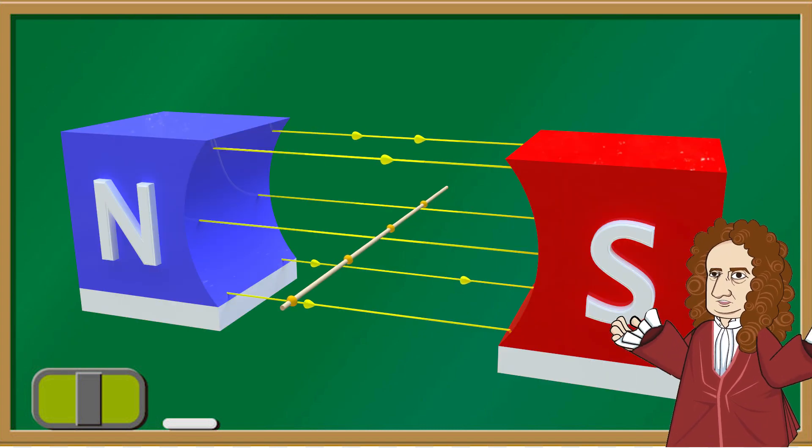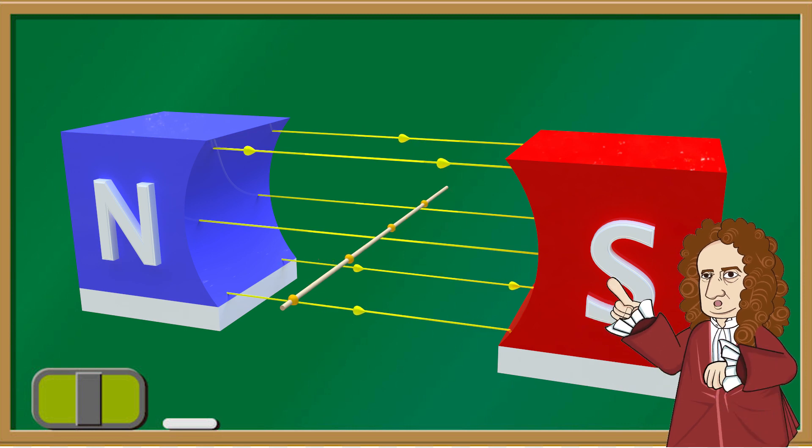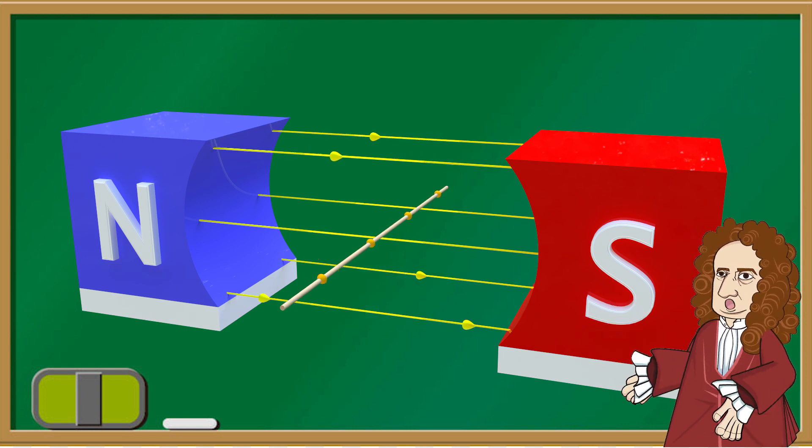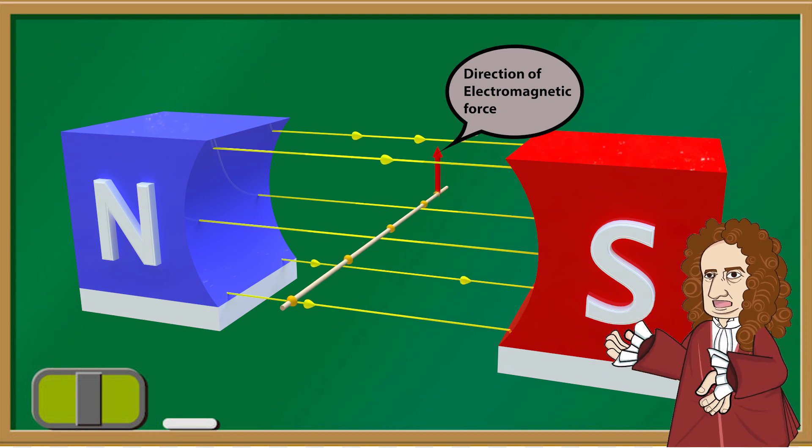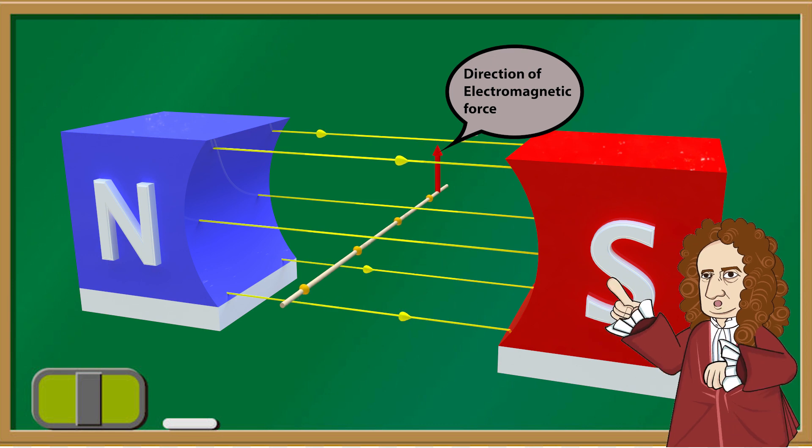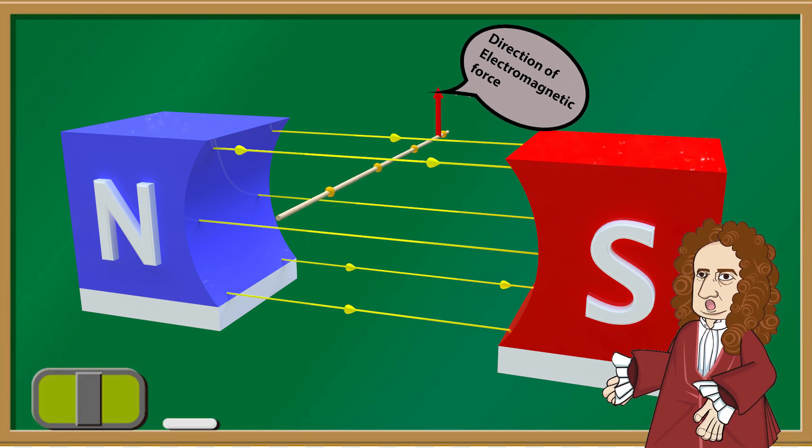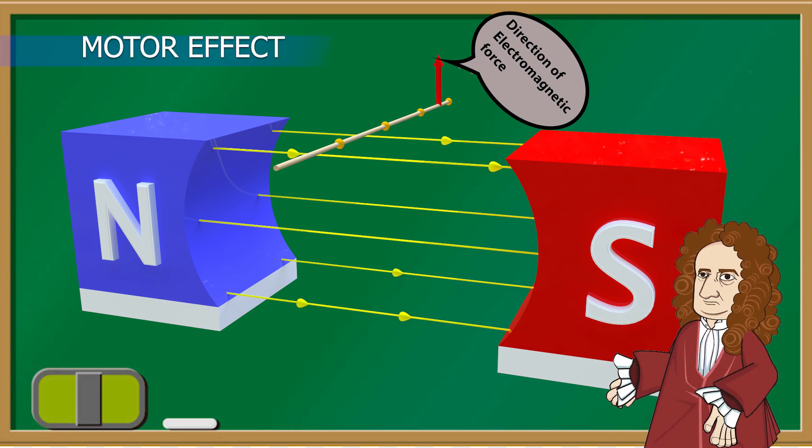If we placed this wire into the magnetic field, the magnetic field of wire now interacts with the magnetic field between the magnets. The result is that the wire carrying an electric current experiences a force, in this case the force is the upward direction. This force results in the upward movement of the wire and this effect is called the motor effect.